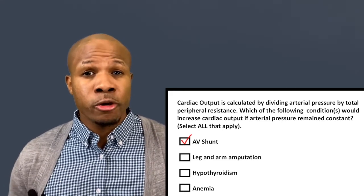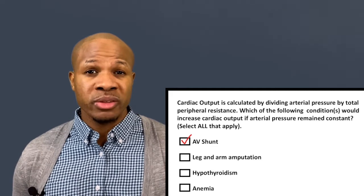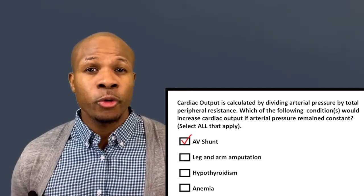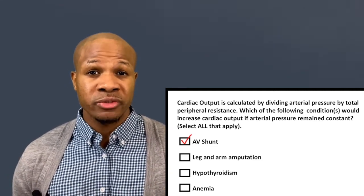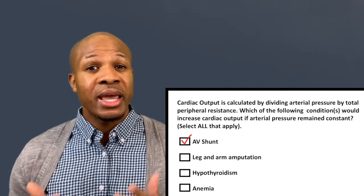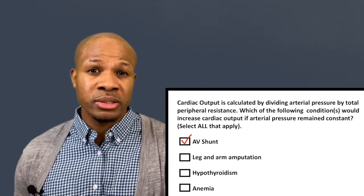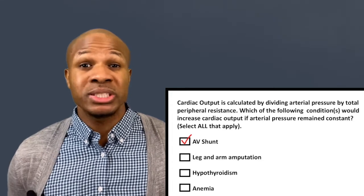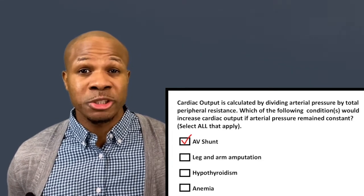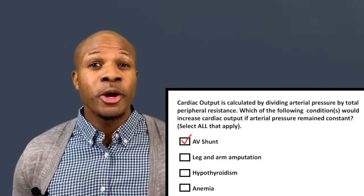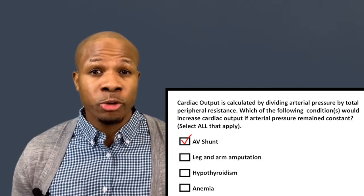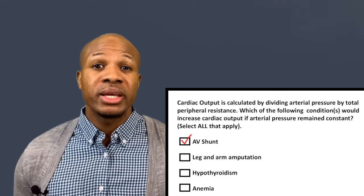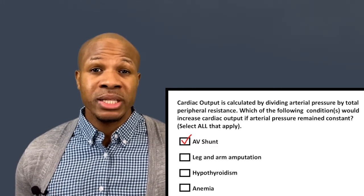What we want is for oxygenated blood from the arteries to go to the different organs and tissues of the body, let them use that oxygen for energy, and then the blood flows into the veins. But with an AV shunt, that oxygen gets wasted because it goes directly from the arteries into the veins. It does lower resistance and increase cardiac output.